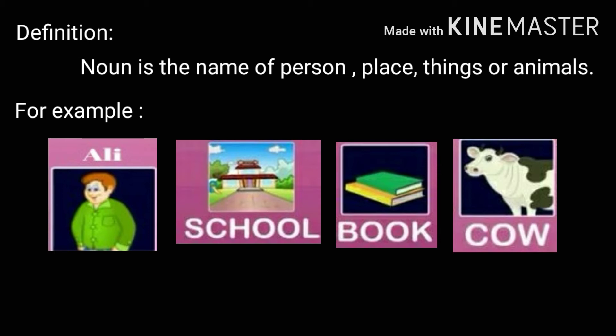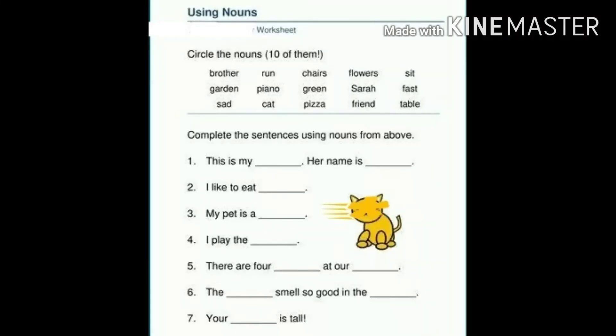Naam is the name of Person, Place, Things or Animal. Kisi bhi cheez, jaga ya janwar ka naam — jaise ke Ali kya hai? Person. School kya hai? Jaga ka naam. Book kisi bhi cheez ka naam. Cow — Animal.